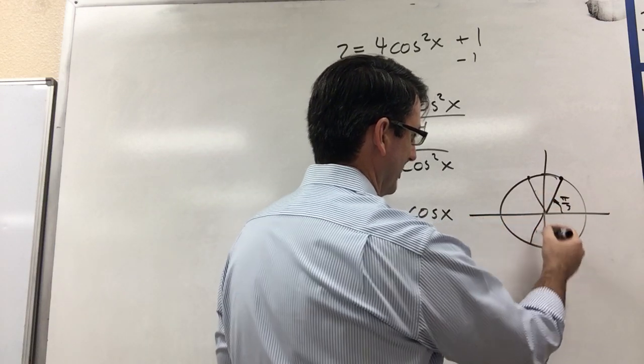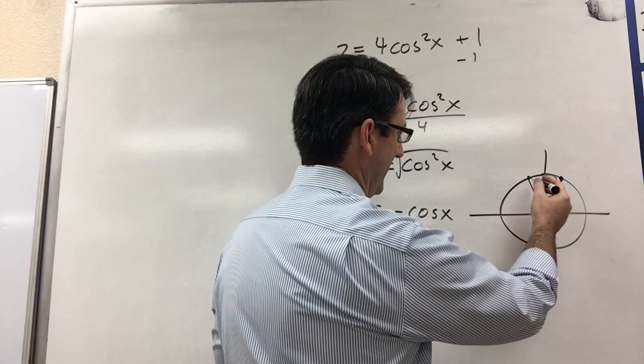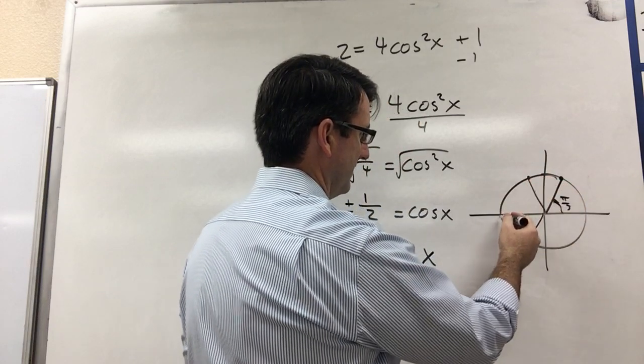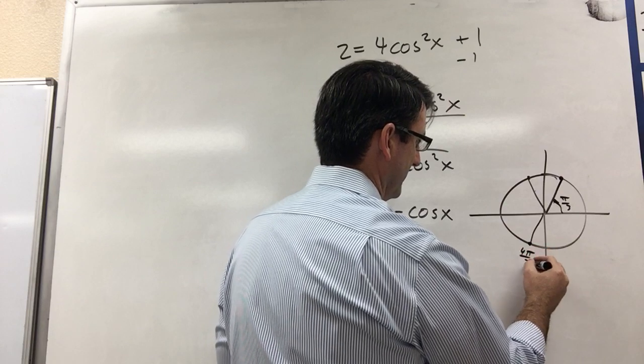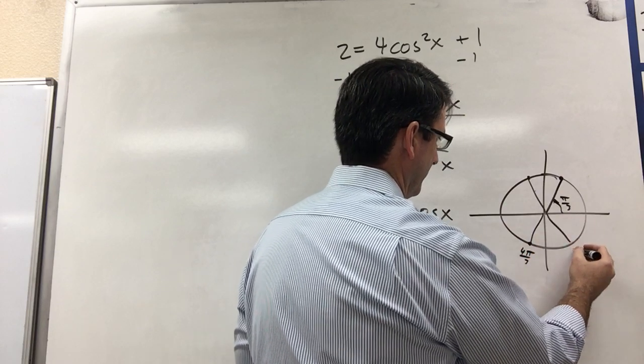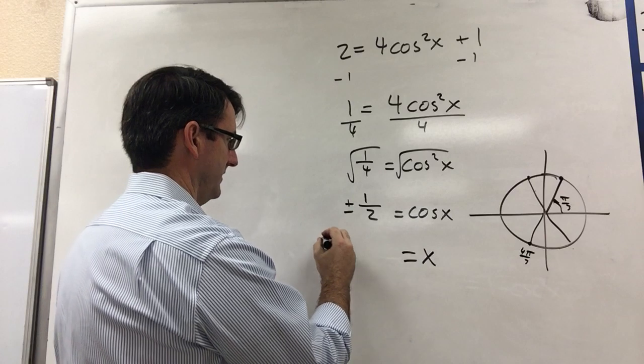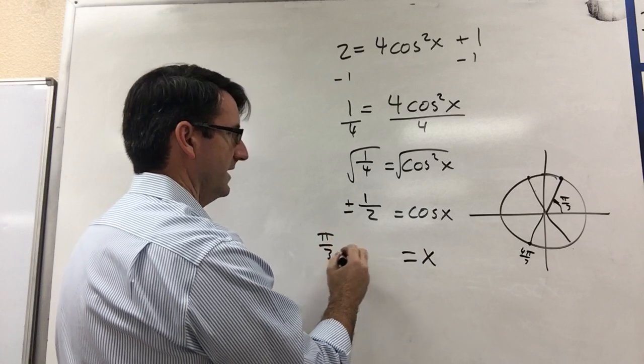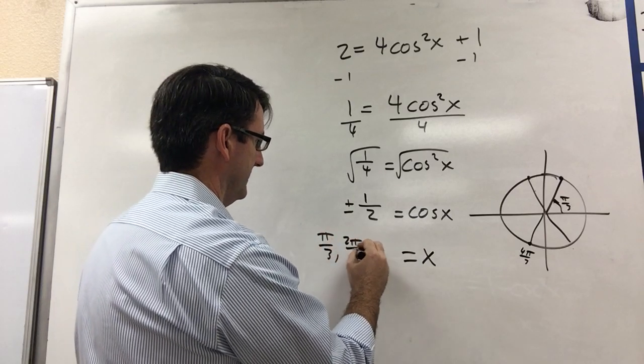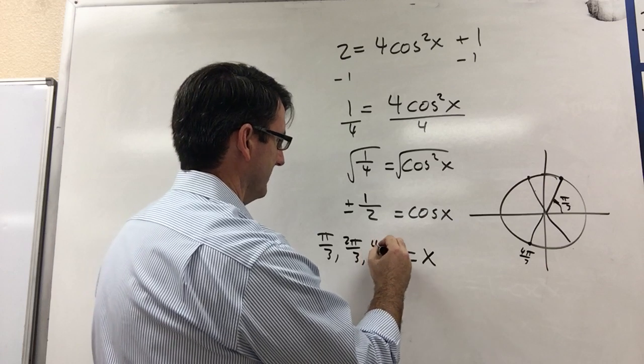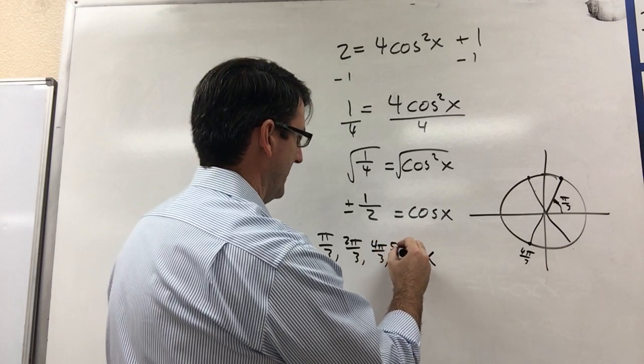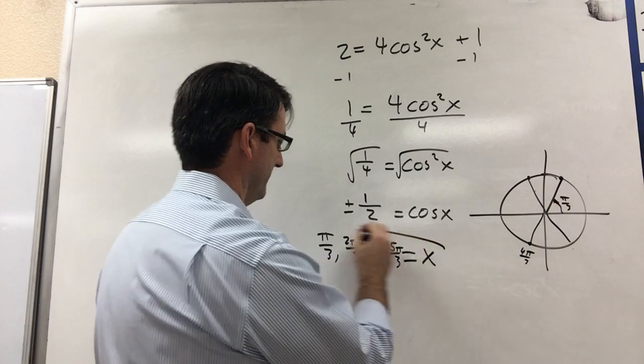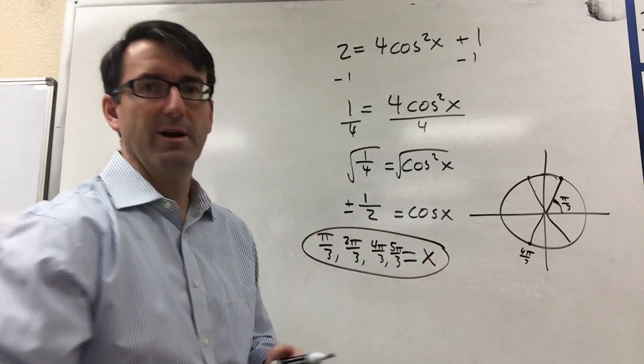And then, let's see, negative 1 half here at, let's see, that's 2π over 3, 4π over 3, and down here at 5π over 3. So the answer is going to be π over 3, 2π over 3, 4π over 3, and 5π over 3. That's going to be our answer.